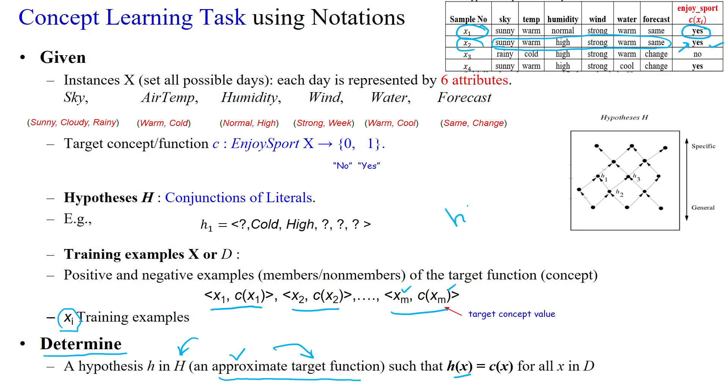So H of Xi, that is with respect to some particular sample is target concept. That means either that value will be true or no, true or false. That means yes or no or zero or one with respect to all training samples. Here we are having four samples. So with respect to all four samples, it should be matched. The hypothesis value should match with the target concept values which is given here.